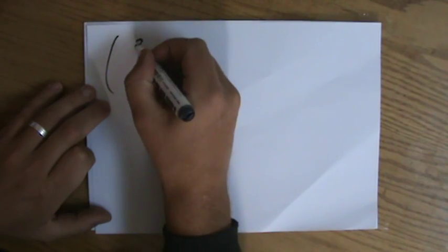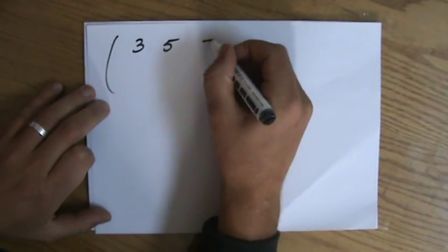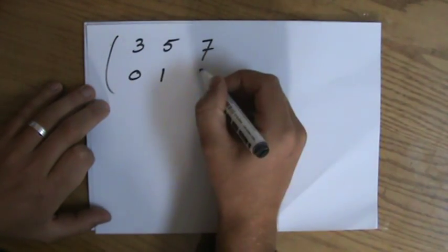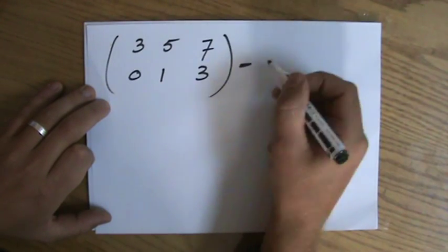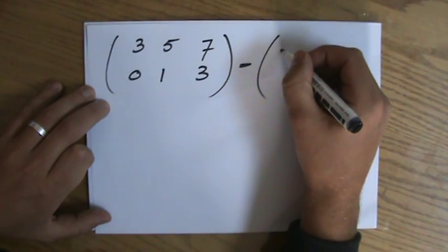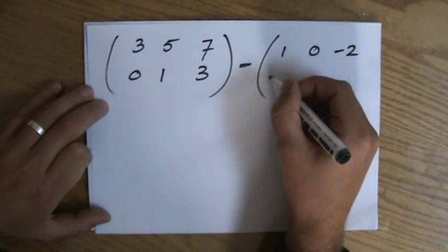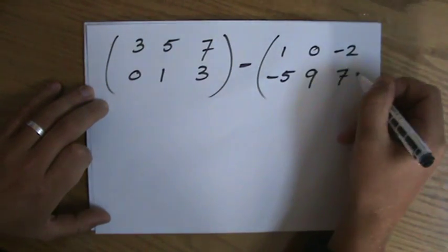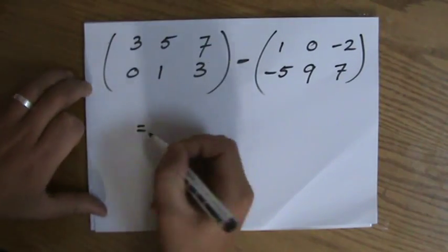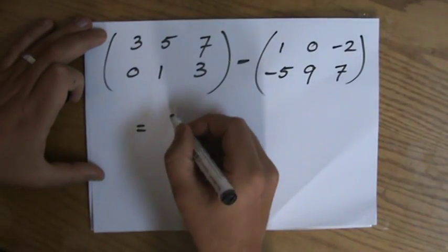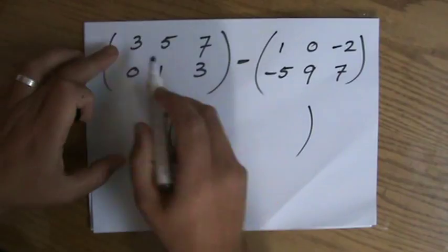Let's say I have 3, 5, 7, 0, 1, 3, and let's do minus now, take away, 1, 0, minus 2, minus 5, 9, and 7. And as I have learned before, or just now actually, I just take away, or I look at one position.